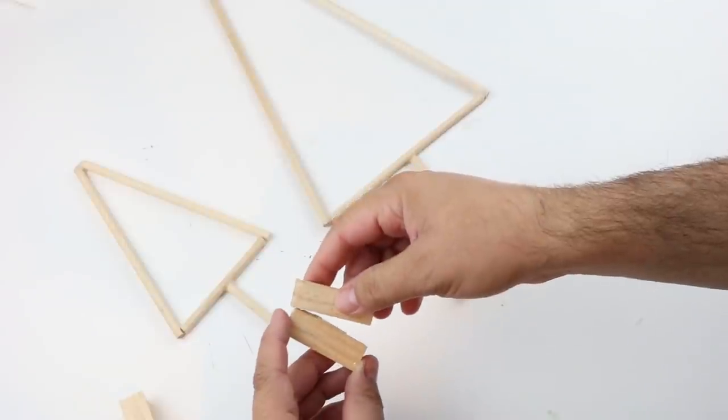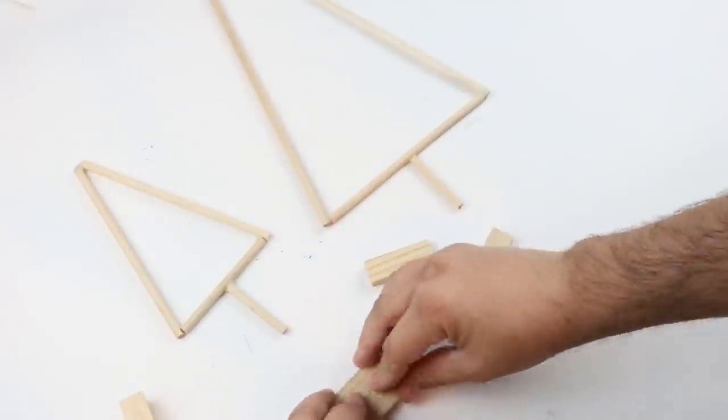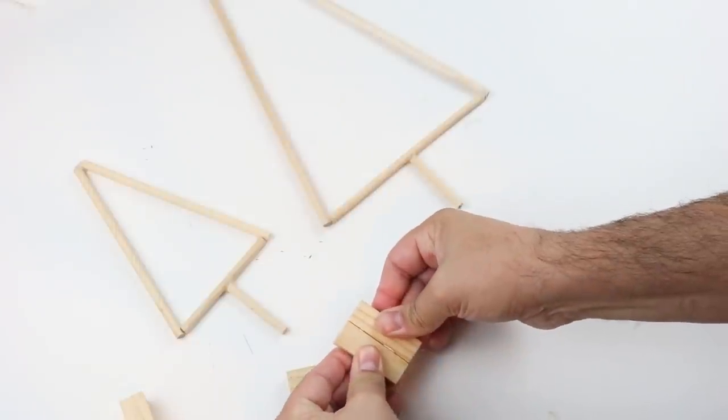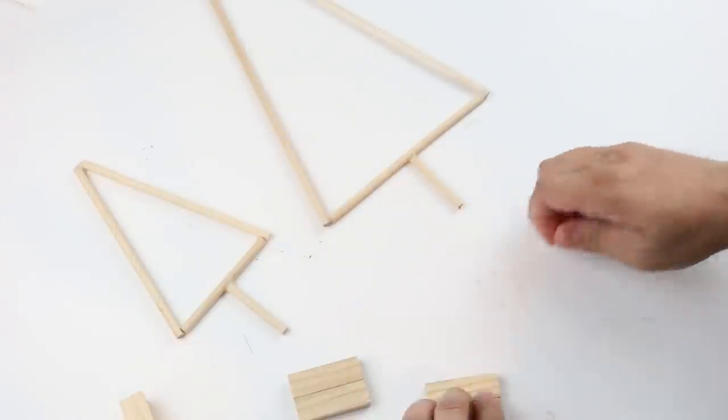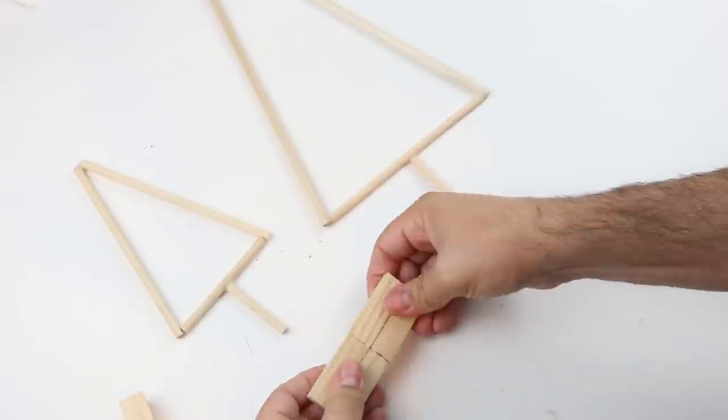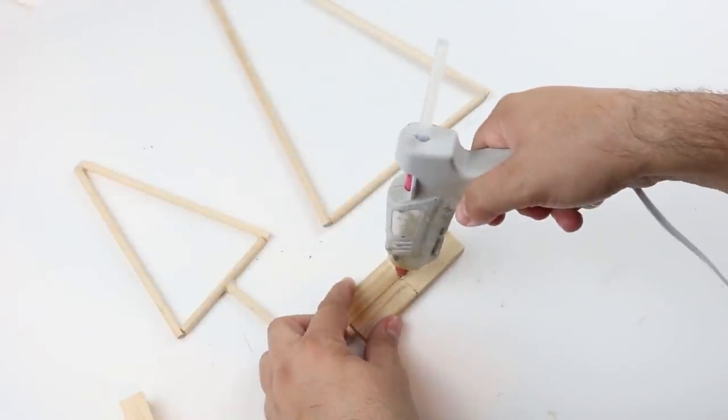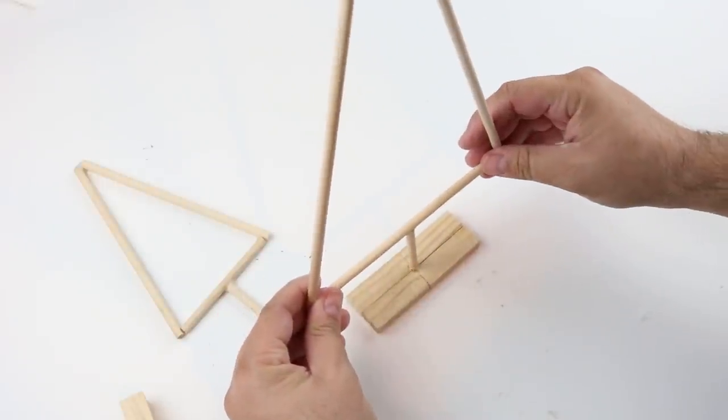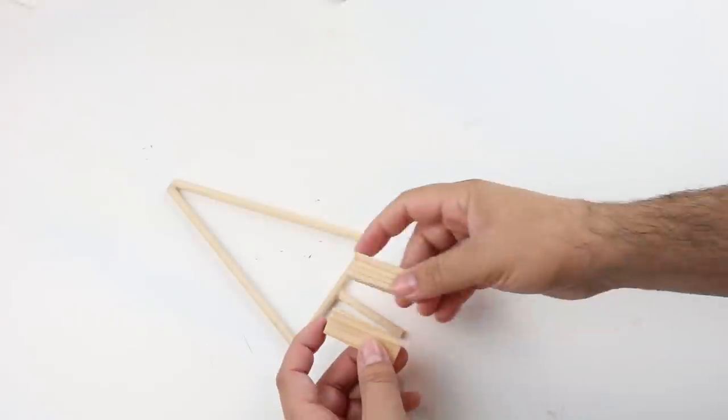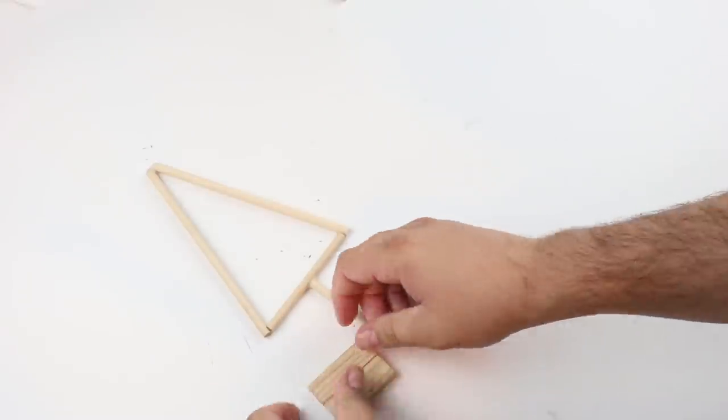Once we have the tree complete, we can move on to the base where we'll attach the tree so it stands upright. I'm using these tumbling tower blocks from Dollar Tree. For the big one I'm using four total, so I glued two together, then another two, then connected them in the middle. Put a little bit of glue right in the center where all four blocks meet, that's where we'll glue our big tree. For the smaller one, same thing but just using two tumbling tower blocks and gluing it in the center.